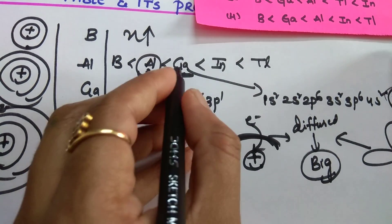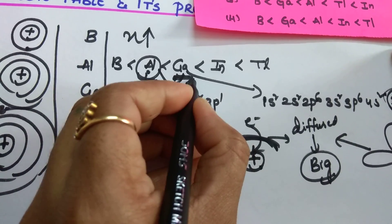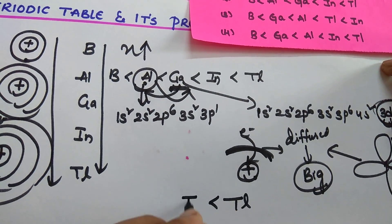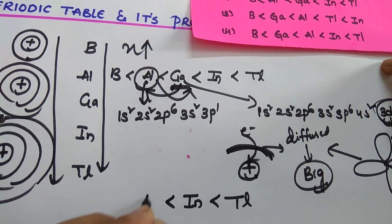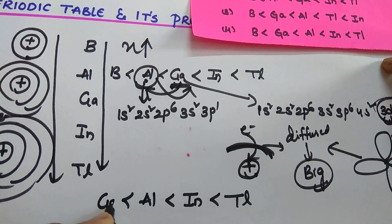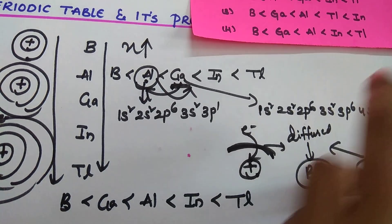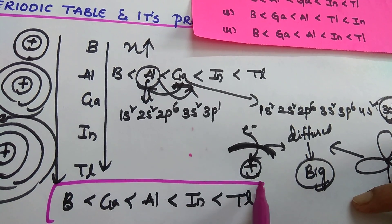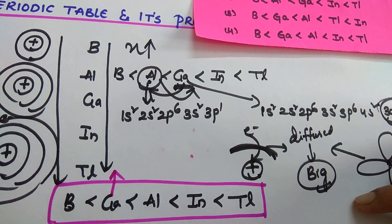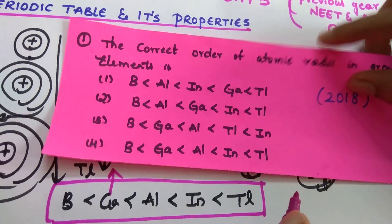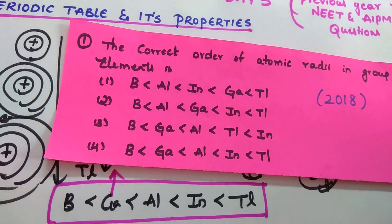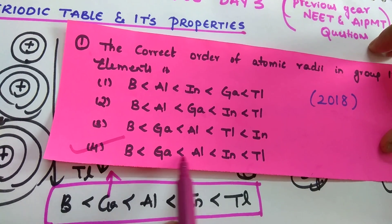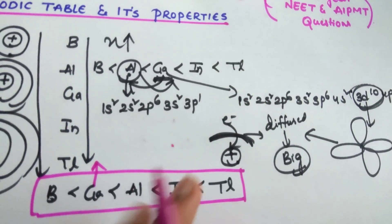So what happens? Gallium will have a smaller size compared to aluminium, due to the poor shielding effect of d-orbitals. Therefore, the correct order is: thallium > indium > aluminium > gallium > boron. This is the correct answer option.